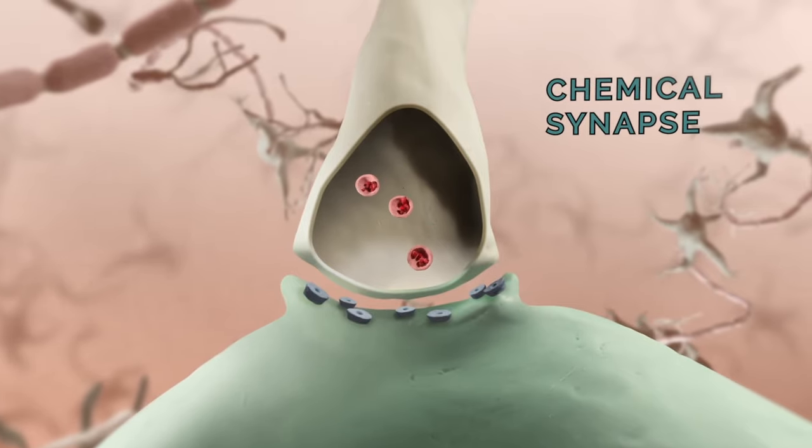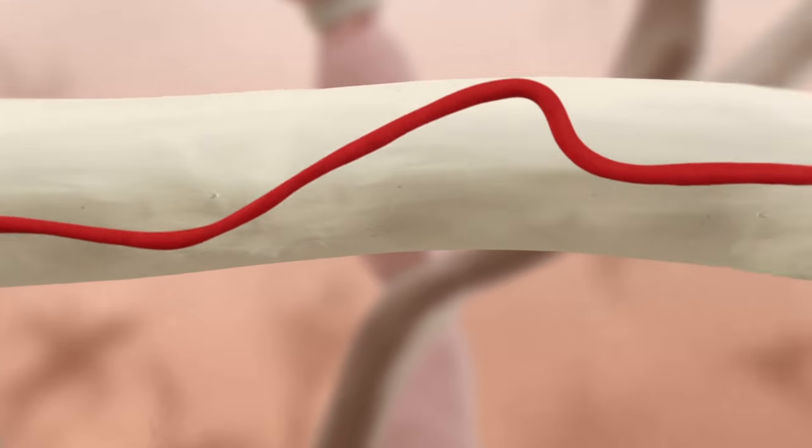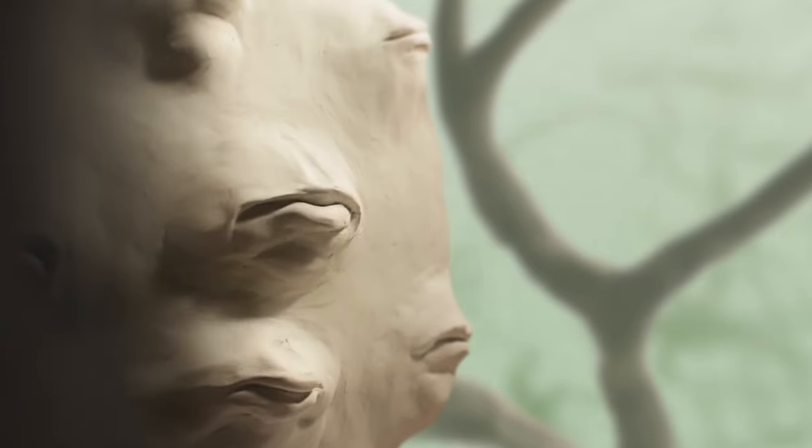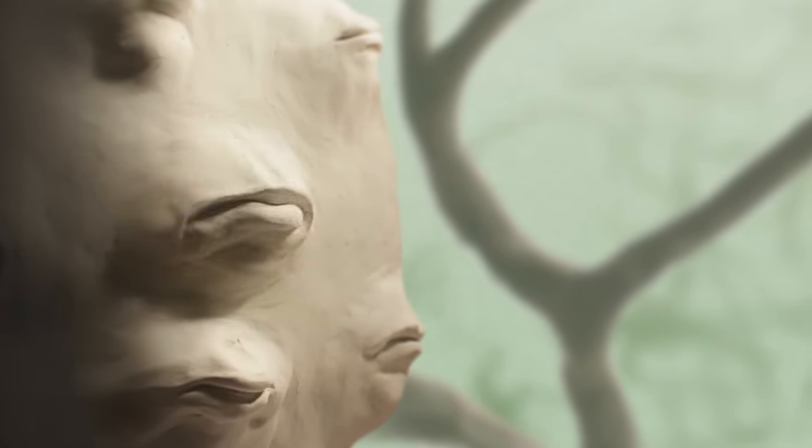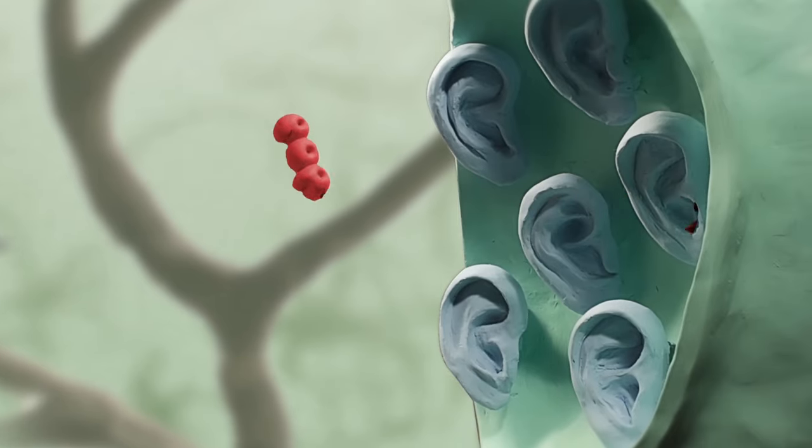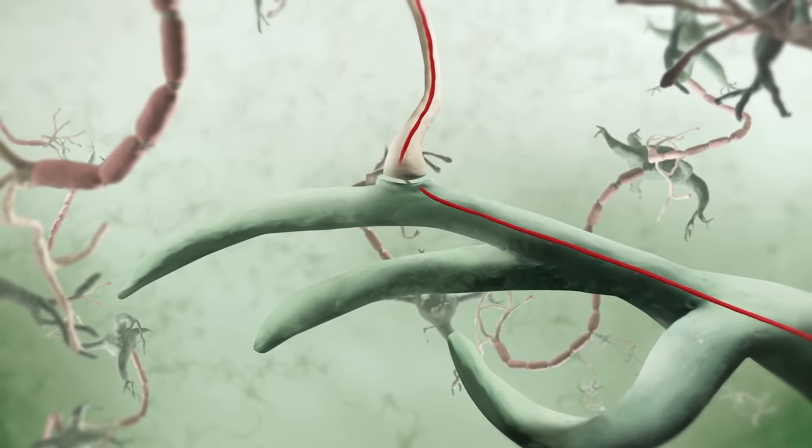But most neurons are connected together by a much more complicated structure called a chemical synapse. In a chemical synapse, rather than simply passing along an electrical signal from one cell to another, the action potential travels to the end of the axon and causes a chemical to be released into a very small space between the two neurons called the synaptic cleft. This chemical is taken up by the downstream neuron on the other side of the cleft. This chemical signal can cause the downstream neuron to depolarize its membrane, converting the chemical signal back into an electrical one, or it can have other effects on the cell.